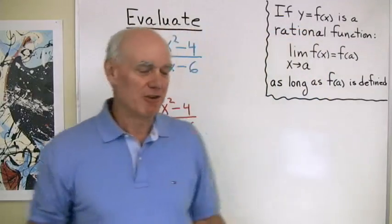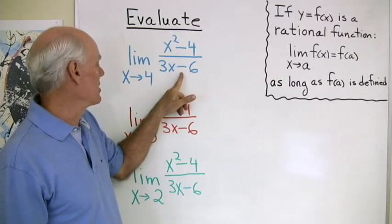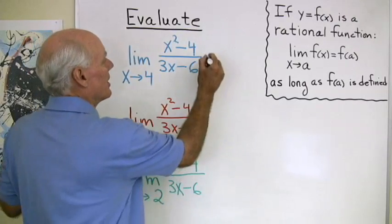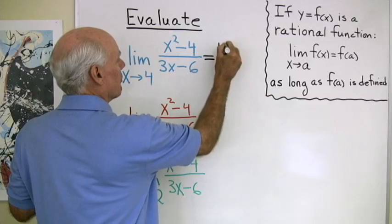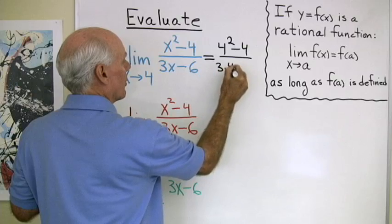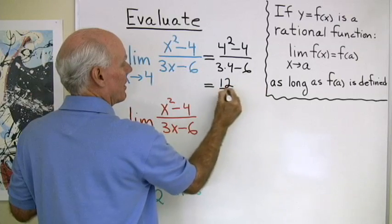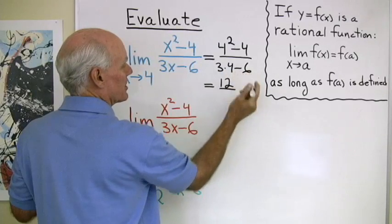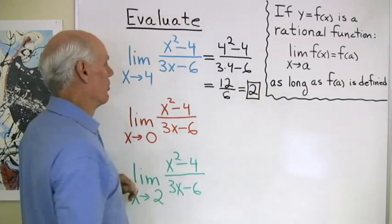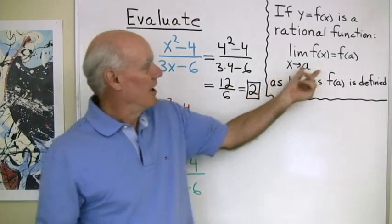Let's look at our first one: the limit as x goes to 4 of (x² - 4) / (3x - 6). This expression is defined when x = 4, so I'll just substitute it in. That gives us (4² - 4) / (3·4 - 6) = (16 - 4) / (12 - 6) = 12/6 = 2. So the limit as x goes to 4 of this expression is 2, by this theorem.